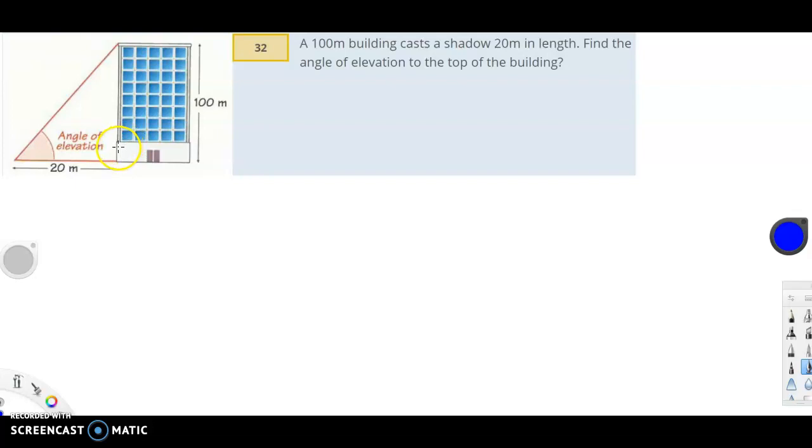It's just a right angle triangle. If we resketch it, there's a right angle here. That's the 20 meter side and this is a 100 meter side. We're looking to get the angle of elevation, we'll call that x. We're looking for that angle there.